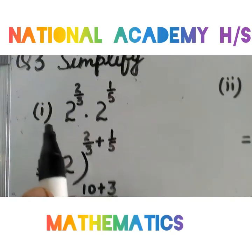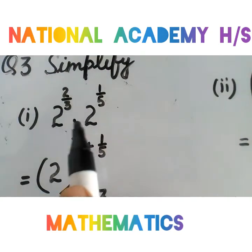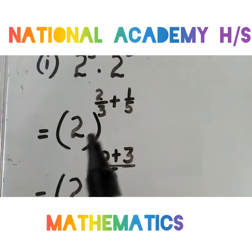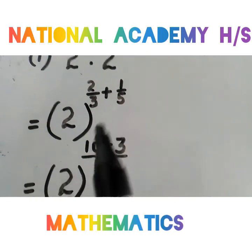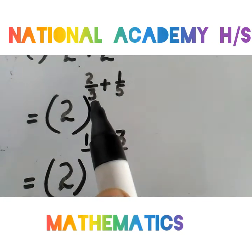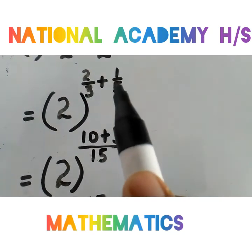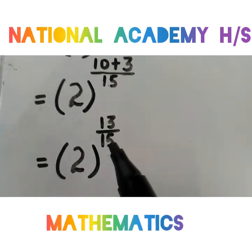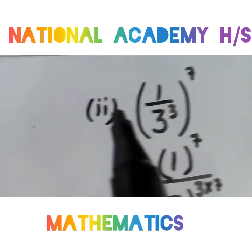Third question: simplify। First part है 2 raise to power 2 by 3 into 2 raise to power 1 by 5। Bases same हैं, multiply में powers add होती हैं: 2 की power 2 by 3 plus 1 by 5। LCM of 3 and 5 is 15 — 15÷3=5, 5×2=10; 15÷5=3, 3×1=3 — so 10 plus 3 = 13 by 15। Answer: 2 raise to power 13 by 15।